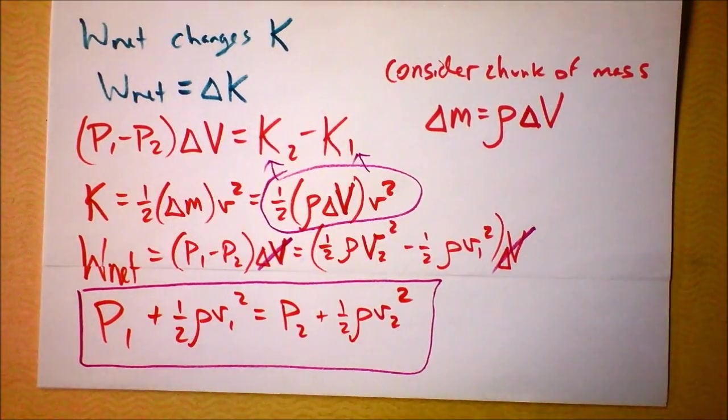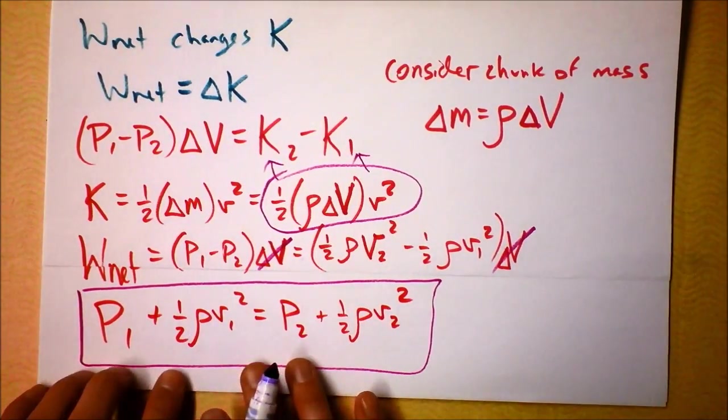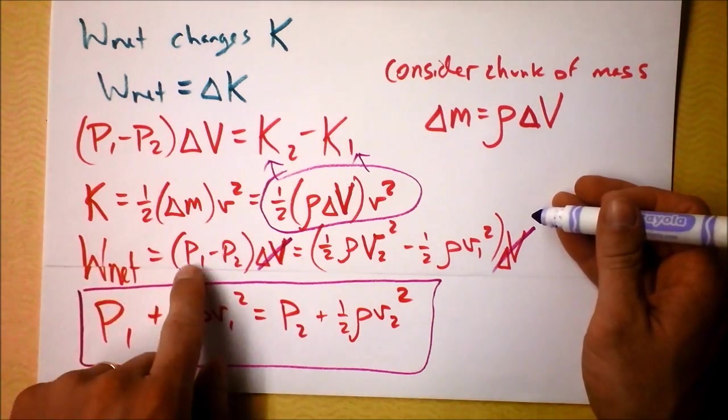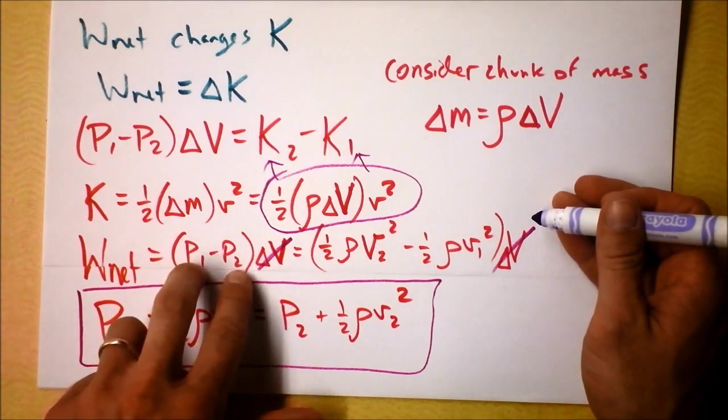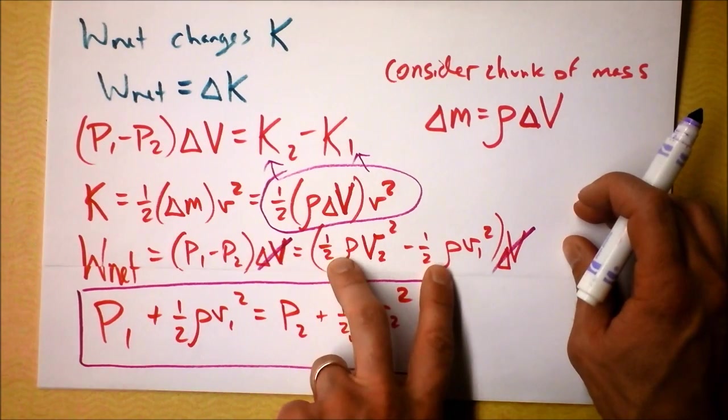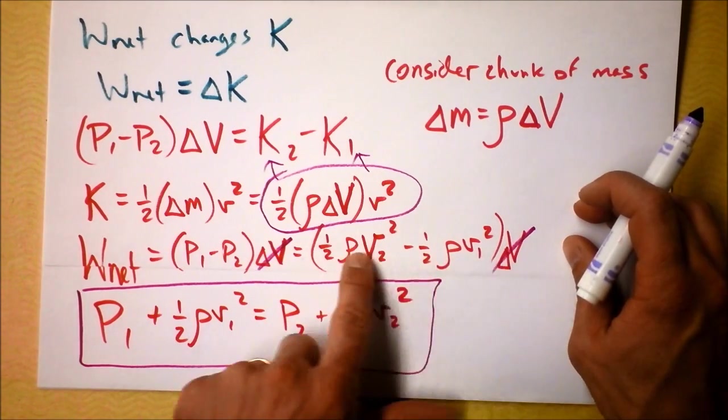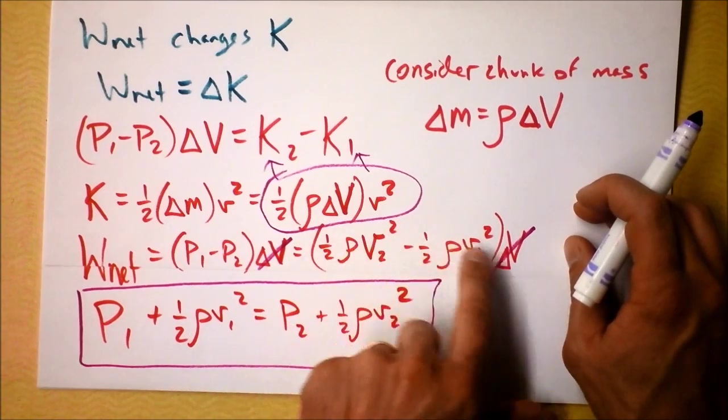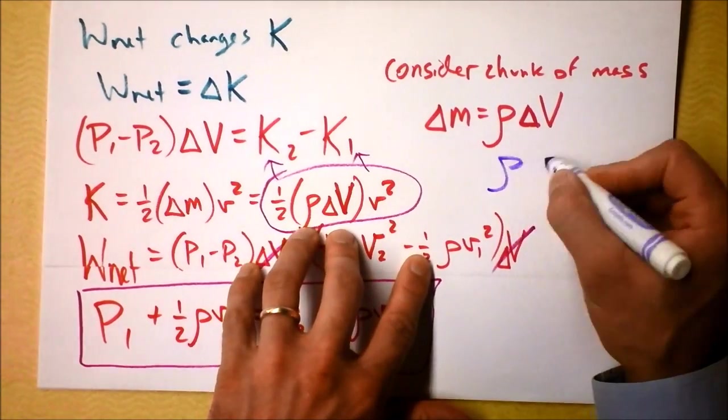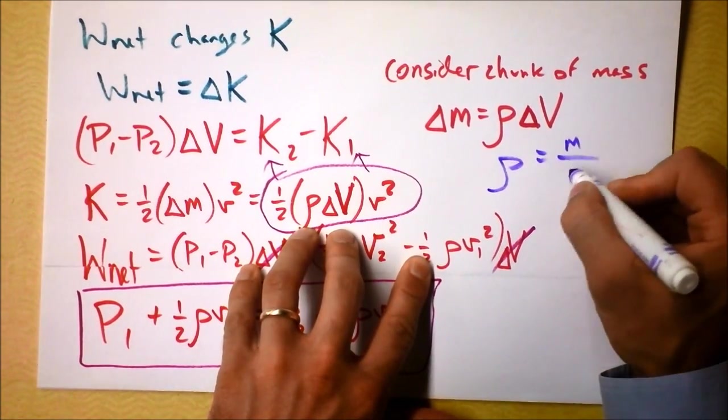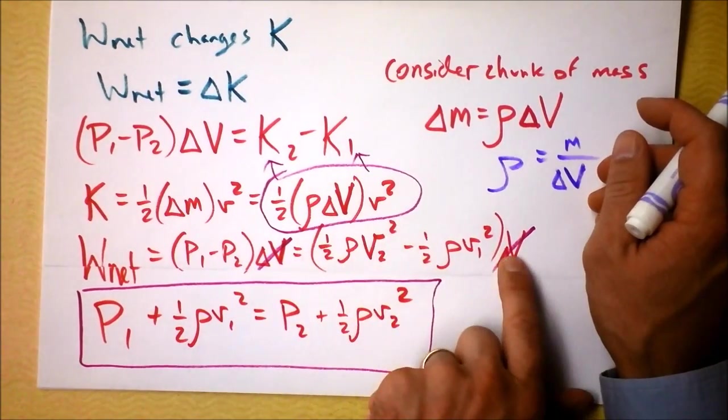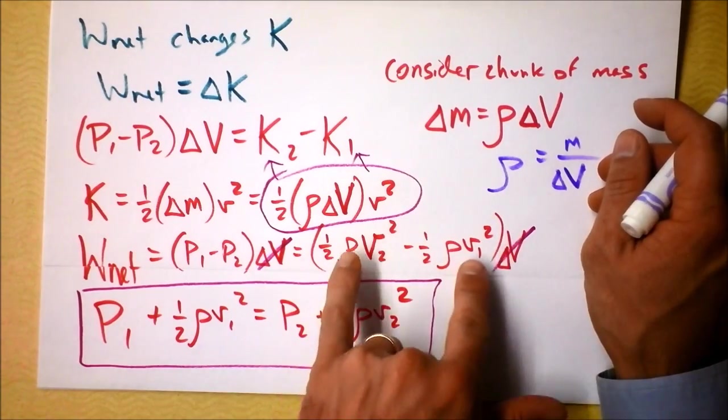So this equation right here is actually a conservation of energy equation. Notice that in the previous line we had said net work is change in pressure, I mean negative change in pressure, times this differential volume. And then we said this is kinetic energy times volume. Well this isn't really kinetic energy though, this is kinetic energy per volume times volume because density is mass divided by volume. So this is kinetic energy per volume multiplied by volume. When we cancel out volume we get kinetic energy.